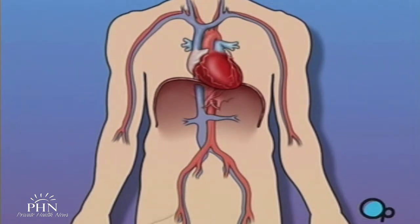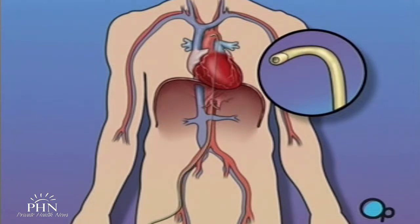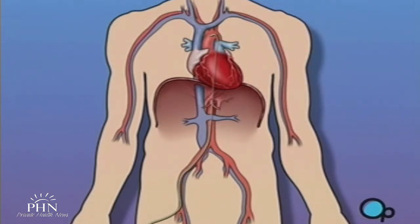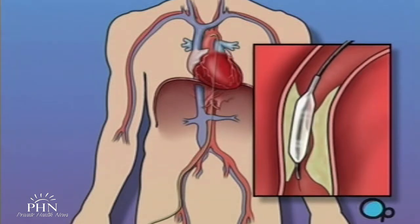During a balloon angioplasty, a heart specialist will insert a thin tube into an artery in your arm or leg and gently guide it towards the problem area in your heart. Once the tube is in place, a small balloon is briefly inflated in order to widen the narrowed artery.